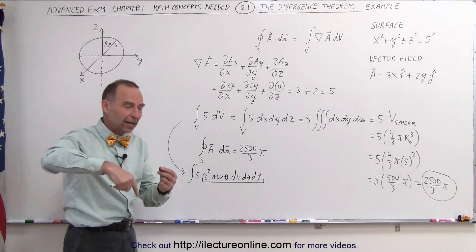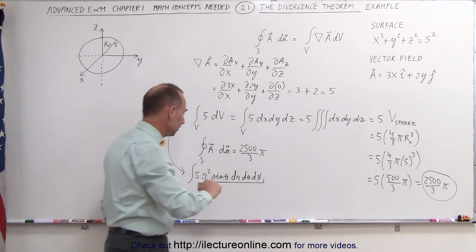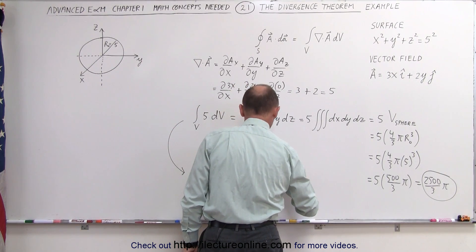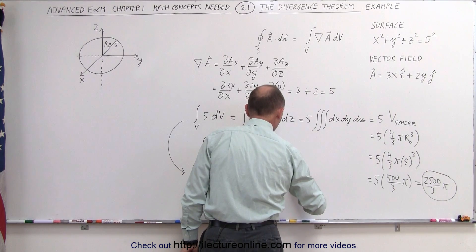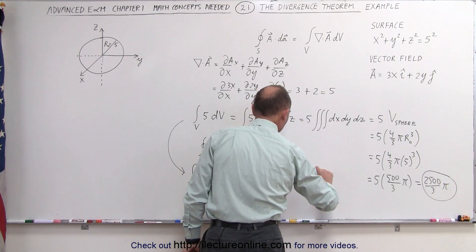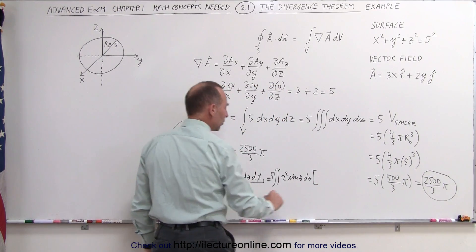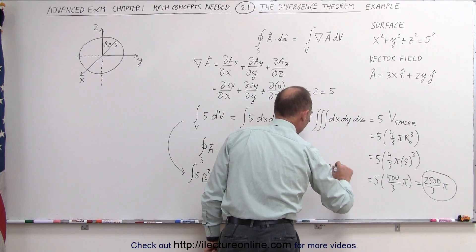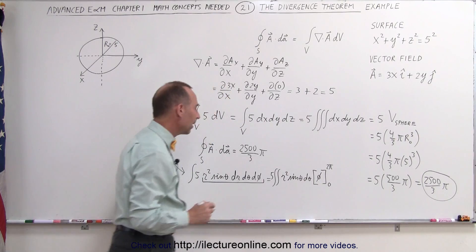d phi, of course, is the angle that goes all the way around the circle. So this is equal to, there's now a double integral remaining, we'll put the 5 in the front, r squared sine of theta d theta, multiplied times the integral of d phi, which is phi, integrated from 0 to 2 pi. And so we get a 2 pi out of that.